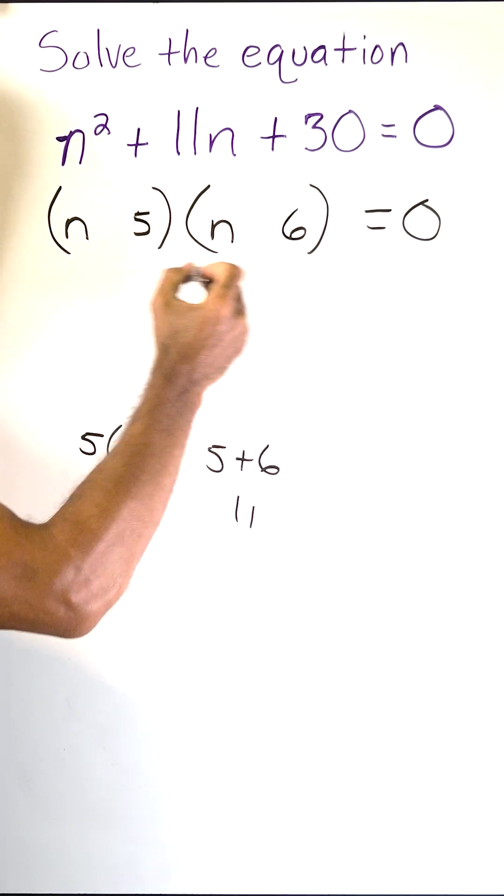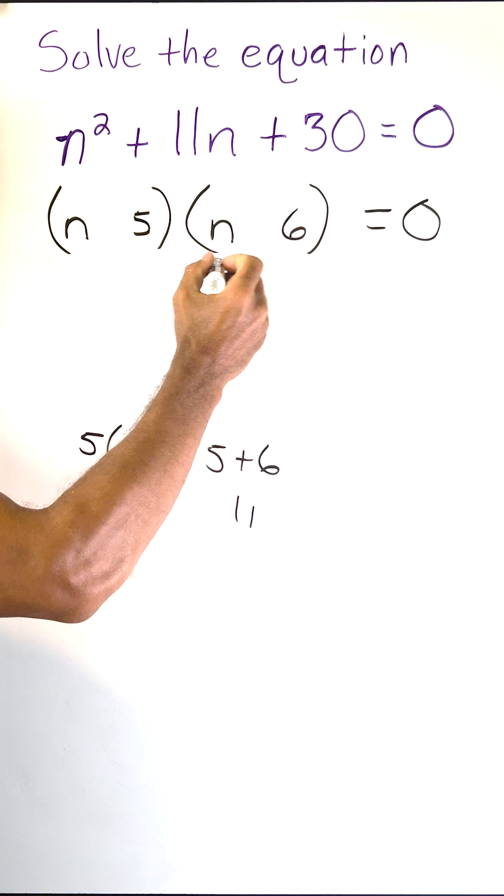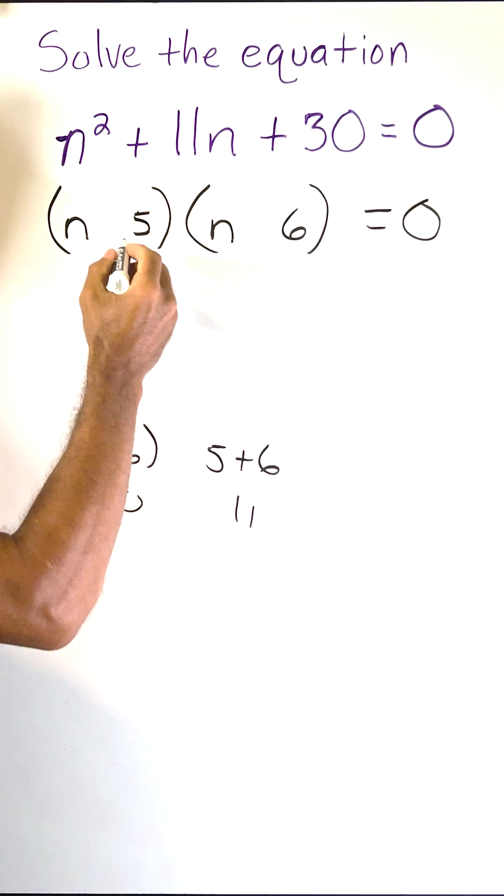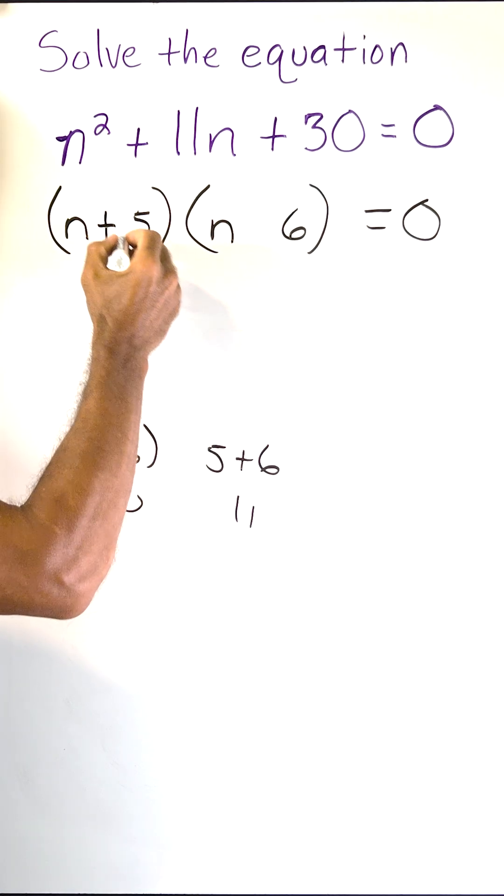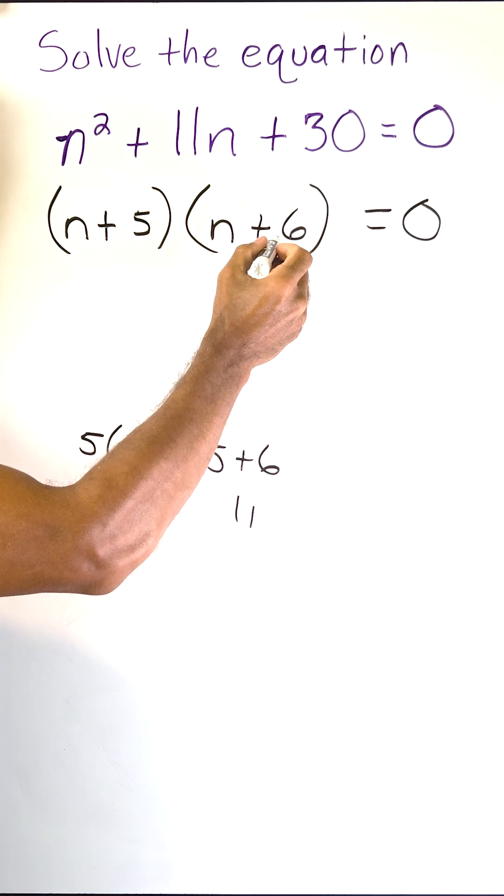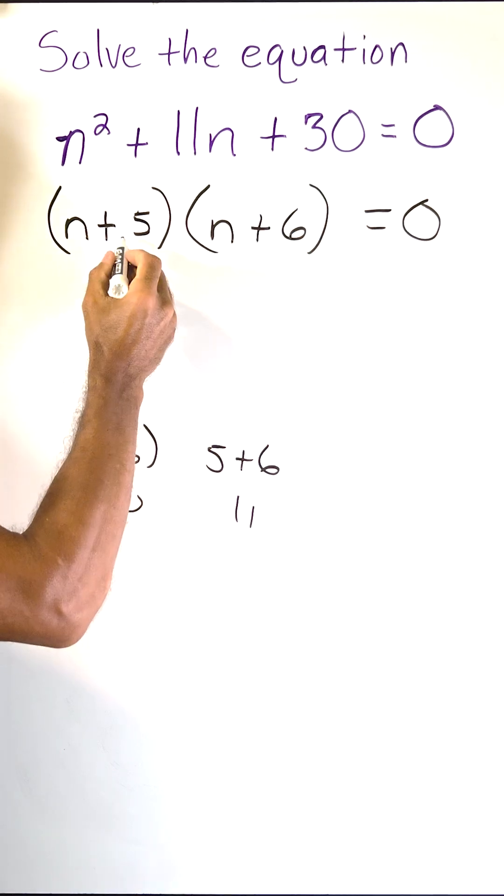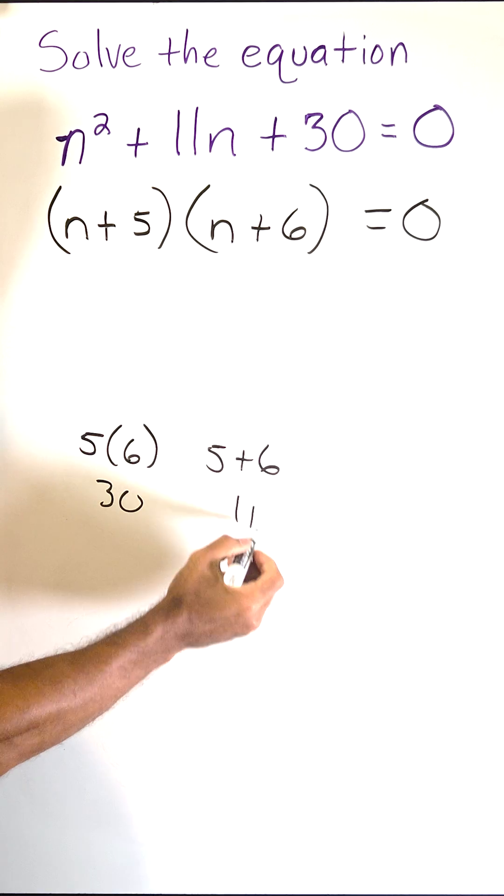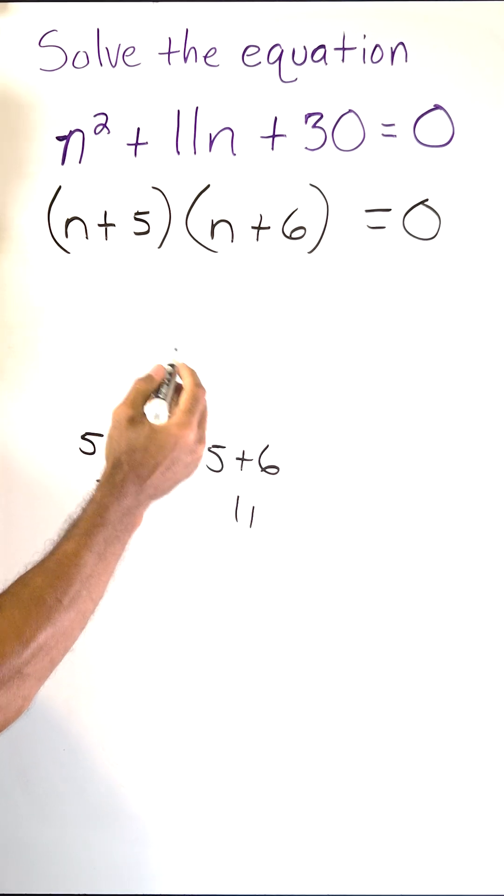So the two numbers you write at the end of each set of parentheses are the two numbers that would produce this last term here. And we have a positive here and a positive here because positive 5 and positive 6 produce 30, and positive 5 and positive 6 when added make 11.